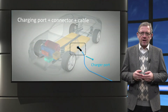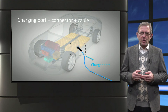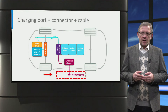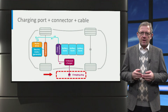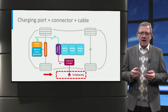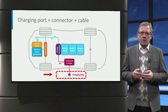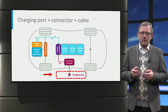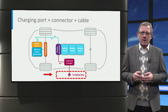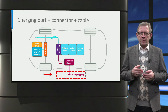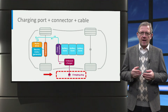The first part we look at is the charging port with charging connector and cable. The charging port together with the connector and cable allows the electric car to connect to an external power supply in order to charge the traction battery pack. The charging port is often referred to as a vehicle inlet.